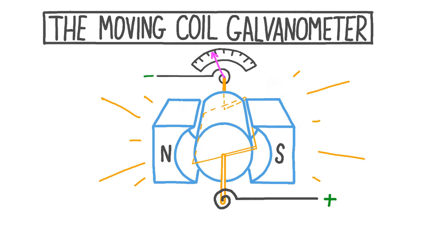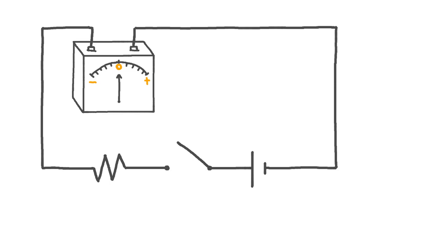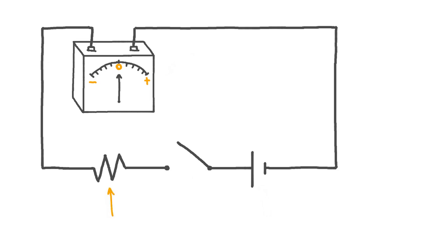First let's quickly take a look at what a moving coil galvanometer actually does. Here we have a simple circuit diagram. Over here is a moving coil galvanometer, and here it's been connected in series with three components: a cell, a switch, and a resistor. The cell provides a potential difference so that a current will flow around the circuit when the switch is closed. The switch lets us turn the circuit on and off, and we include a resistor so that the current doesn't get too high. The use of a moving coil galvanometer in this circuit is that it gives us an indication of the magnitude and direction of the current.